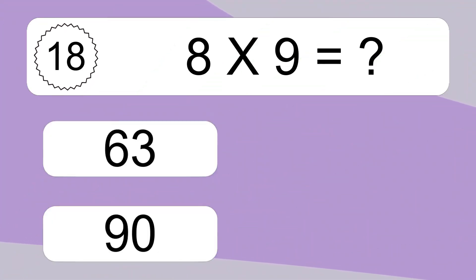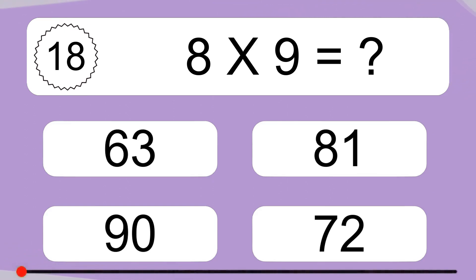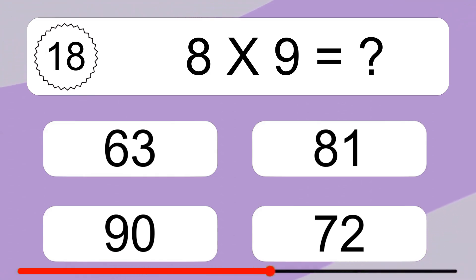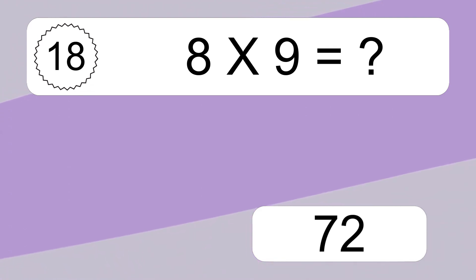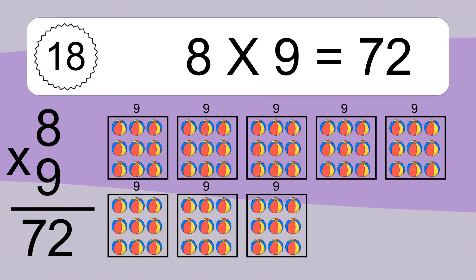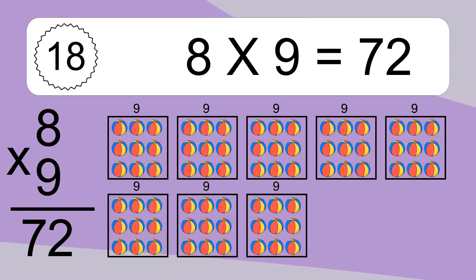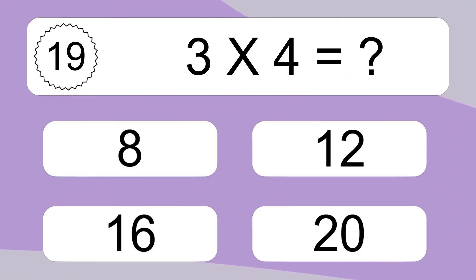8 times 9 equals what? 8 times 9 equals 72. We have 8 boxes, and each box has 9 colorful balls inside. If you count all the balls in all the boxes together, you will have 8 times 9 balls. This equals 72 balls.